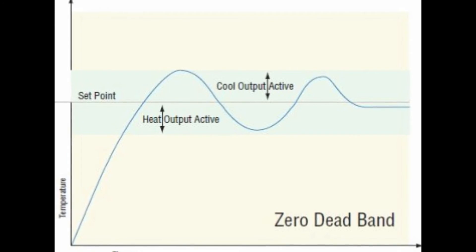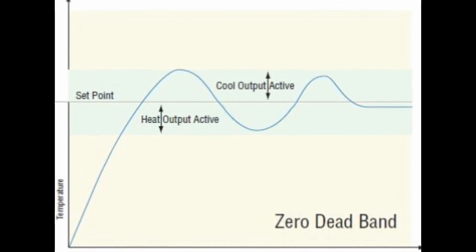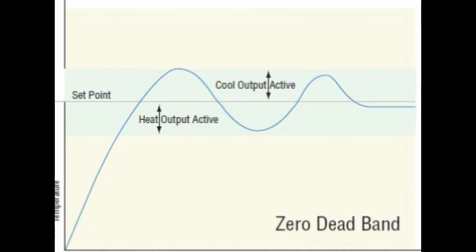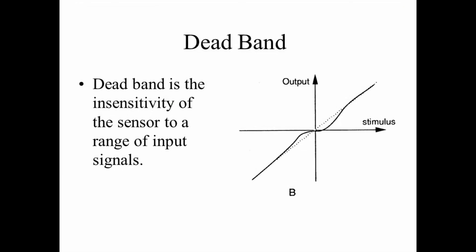Electronic pressure switches utilize pressure sensing technology that has much smaller hysteresis and include the ability to adjust the open-close dead band via the electronics.